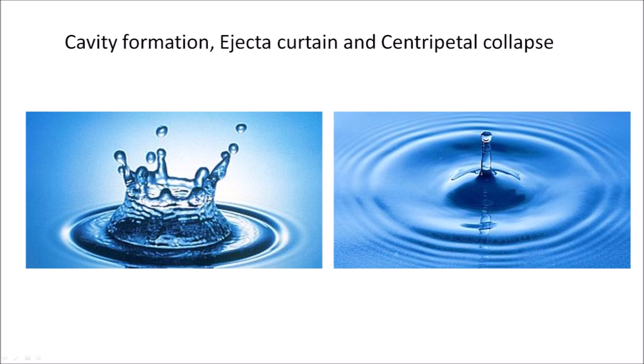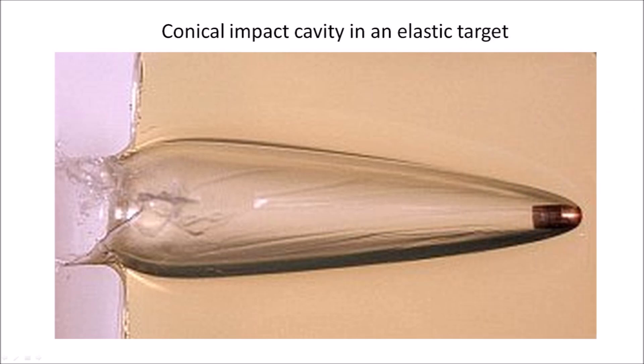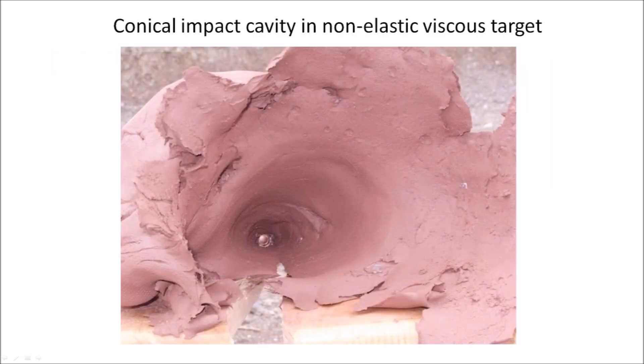Water has low viscosity. When all the energy of the impact has been dissipated, the surface of the water becomes level again under the force of gravity. The impact of a projectile on an elastic medium, such as ballistic gel, also forms a conical cavity, but the cavity collapses into a tube after the projectile has passed. A projectile traveling through a non-elastic viscous target produces a typical conical cavity, but the cavity retains the conical shape of the shockwave, unlike the low viscosity and elastic targets.